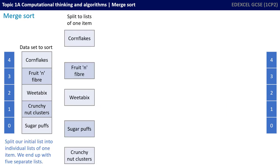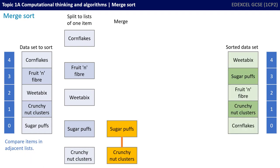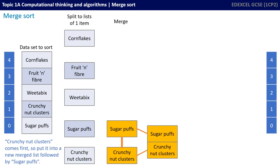We start by splitting our initial list into individual lists of one item. We end up with five separate lists as shown here. We then compare items in adjacent lists. We compare sugar puffs to crunchnut clusters. Crunchnut clusters comes first, so we put it into a new merged list, followed by sugar puffs.